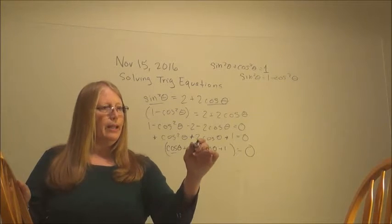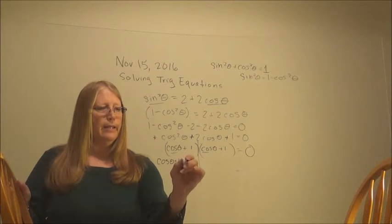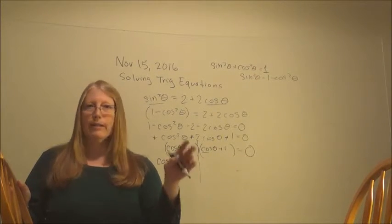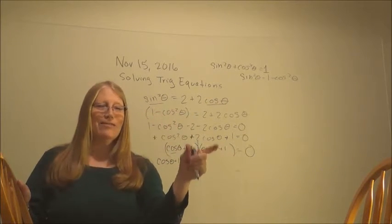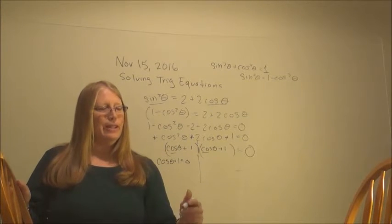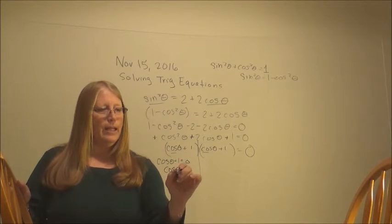So now we have two branches. Set each one equal to 0, because when something times something equals 0, either or. I could hear you. Alright, so I'm setting this one equal to 0, and I get cosine of theta equals minus 1.